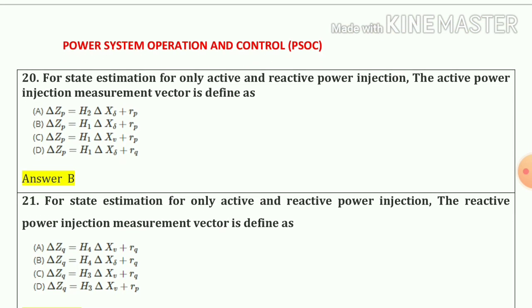Question number 20: For state estimation with only active and reactive power injections, the active power injection measurement vector is defined as option number b, which is our correct answer.